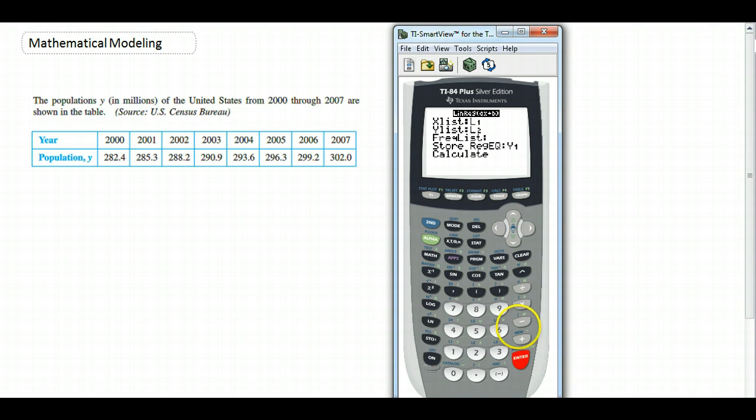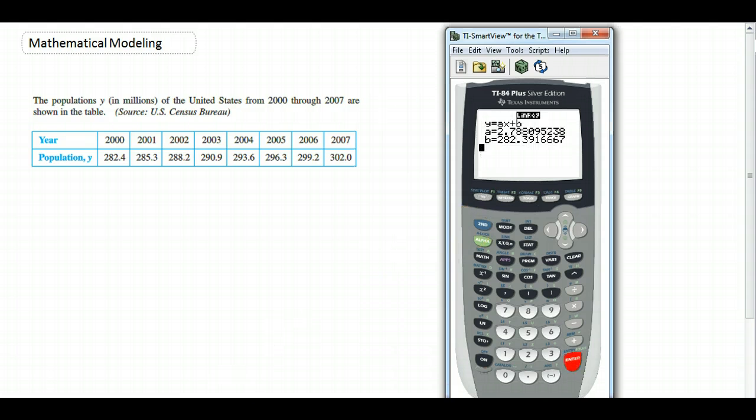So I'm going to go to alpha F4 and hit Y1. If we go to Y equals, it should have been there. Hang on just a minute. Okay, here's the deal, I forgot to tell it to calculate it.